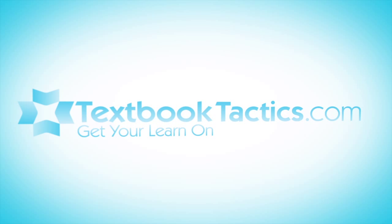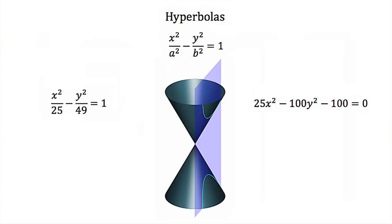This is a tutorial on hyperbolas as conic sections. A conic section shaped like a hyperbola comes from when our intersecting plane intersects our double cone in more than one place. When that happens, we get the shape of a hyperbola.